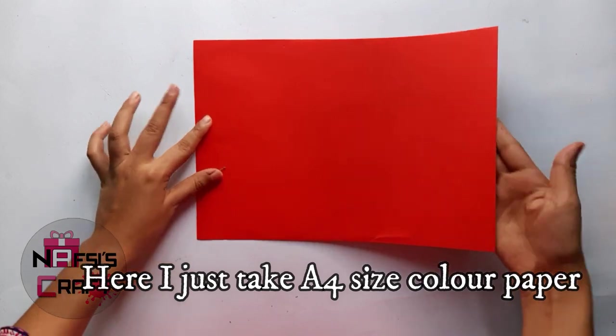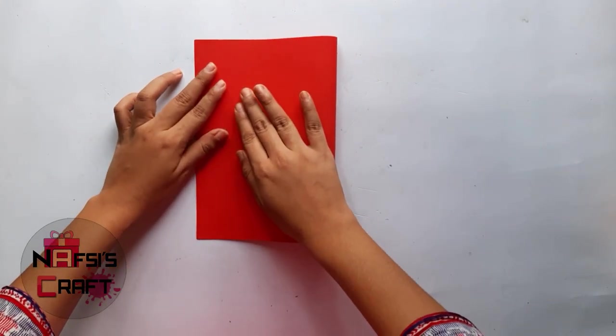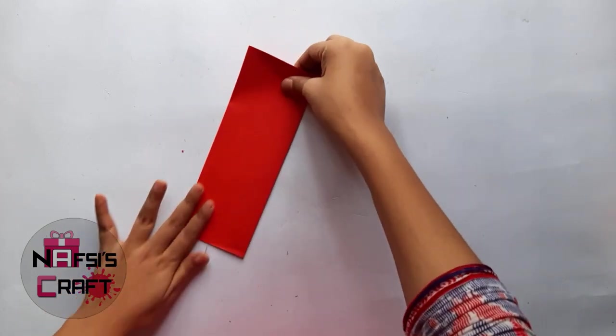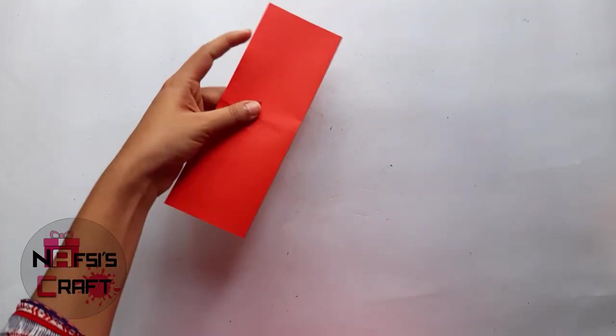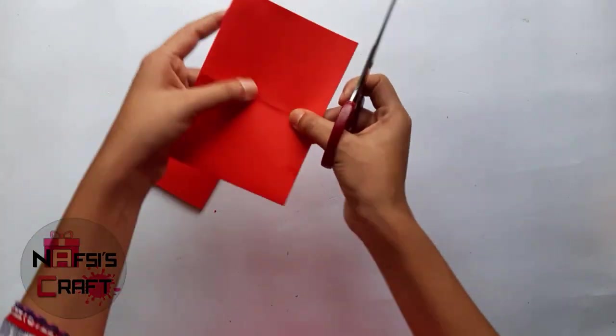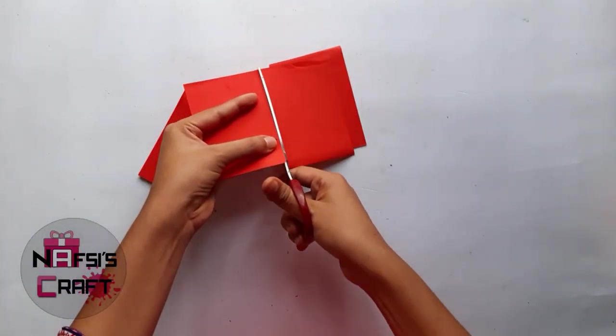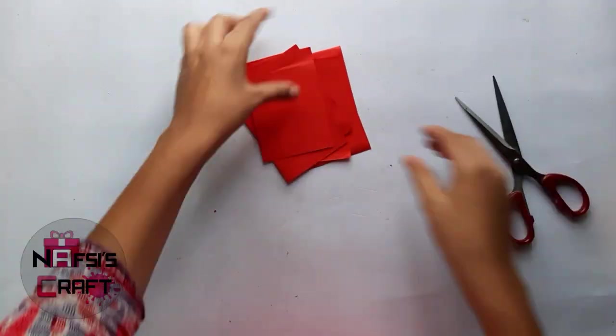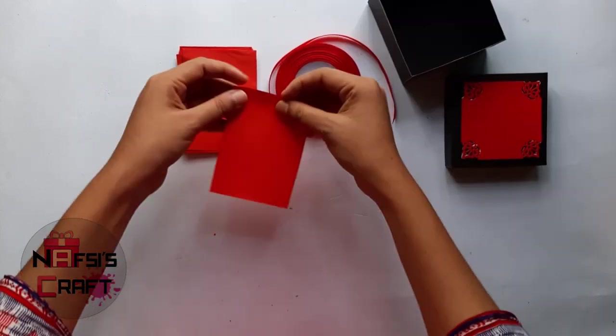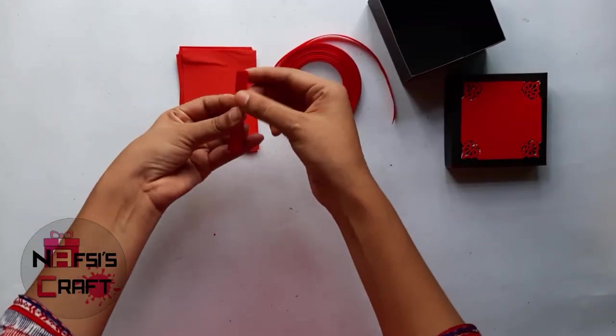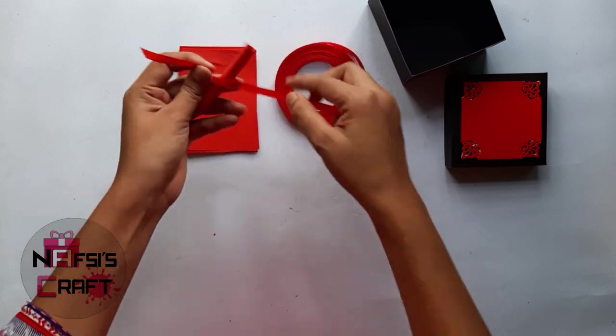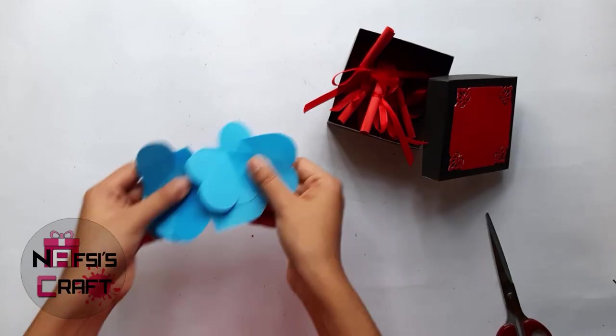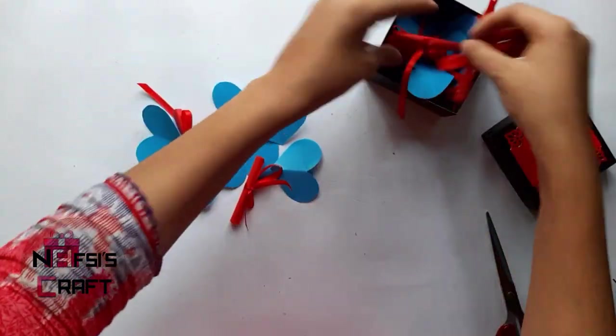Here I am just taking A4 size colored paper and fold it. I am going to tie it with a ribbon. I am making some message paper that you could write message to your lover. After folding it, I am going to tie it with a ribbon, and then I put some glue in this box.